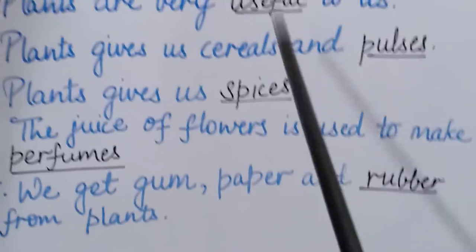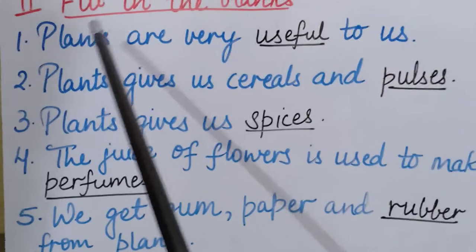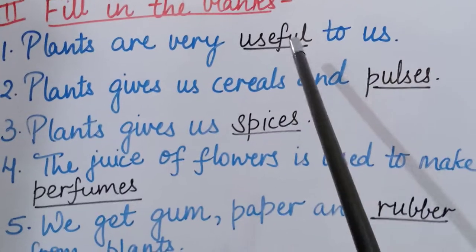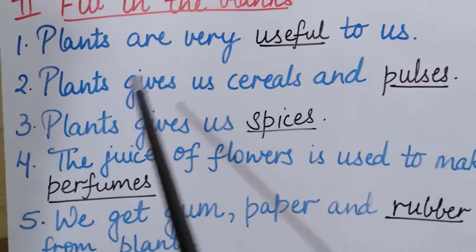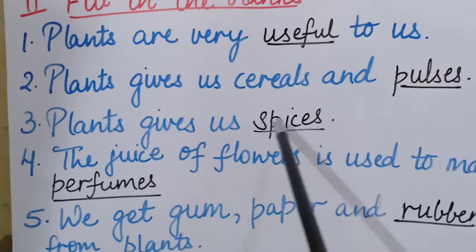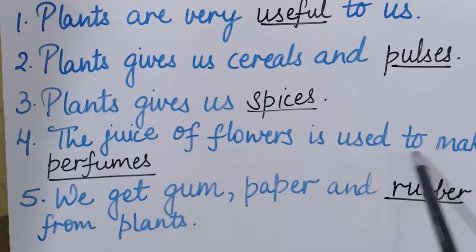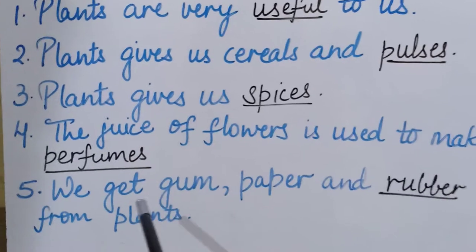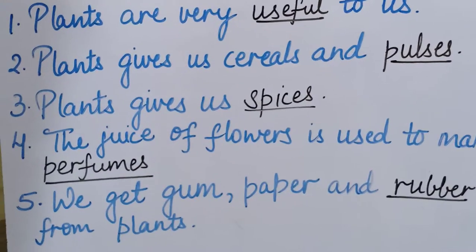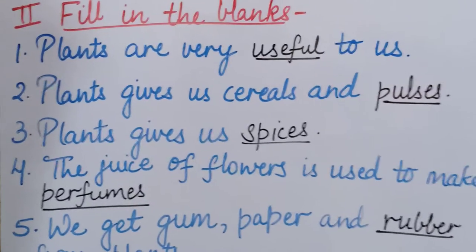Again repeating all the fill in the blanks: plants are very useful to us; plants give us cereals and pulses; plants give us spices; the juice of flowers is used to make perfumes; we get gum, paper and rubber from plants. I hope you all have understood the second part — fill in the blanks.